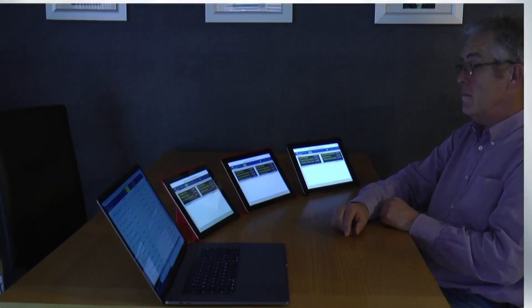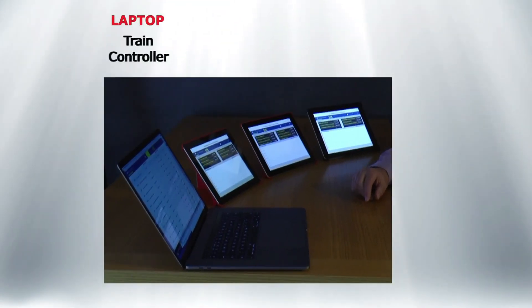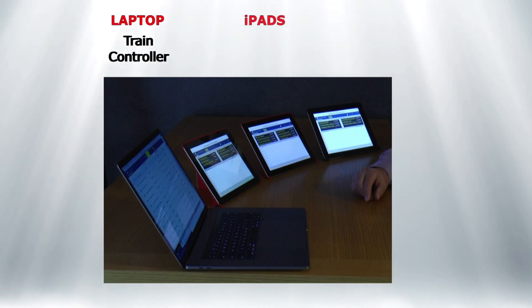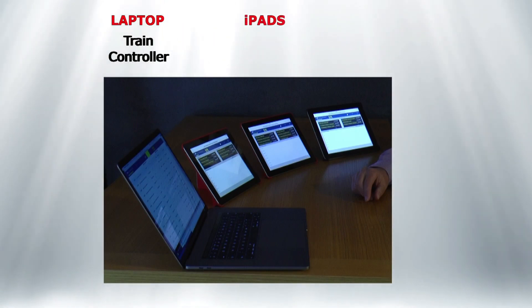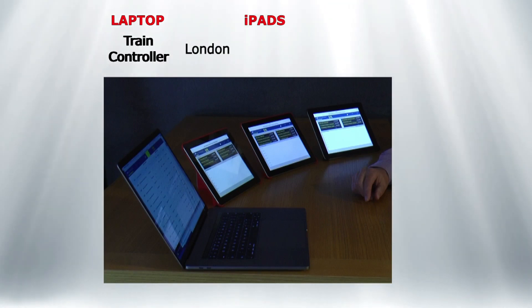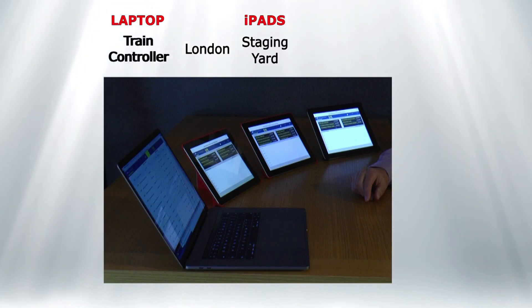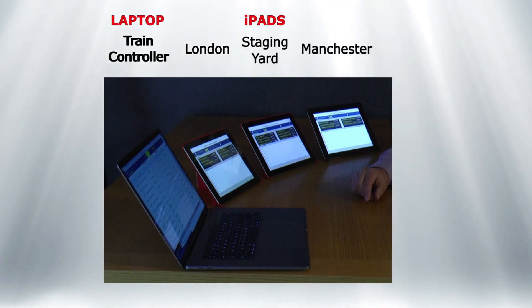What we've got in front here is a laptop with the train controller and the timetable, and we've got three iPads. The idea here is that each area on the layout will have an iPad and it will control and show the operator the arrivals and departures of the trains due at their station.